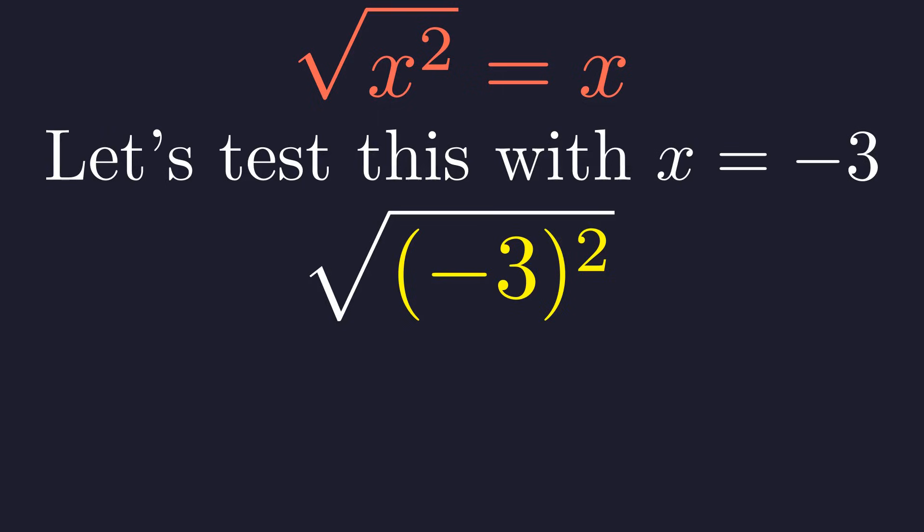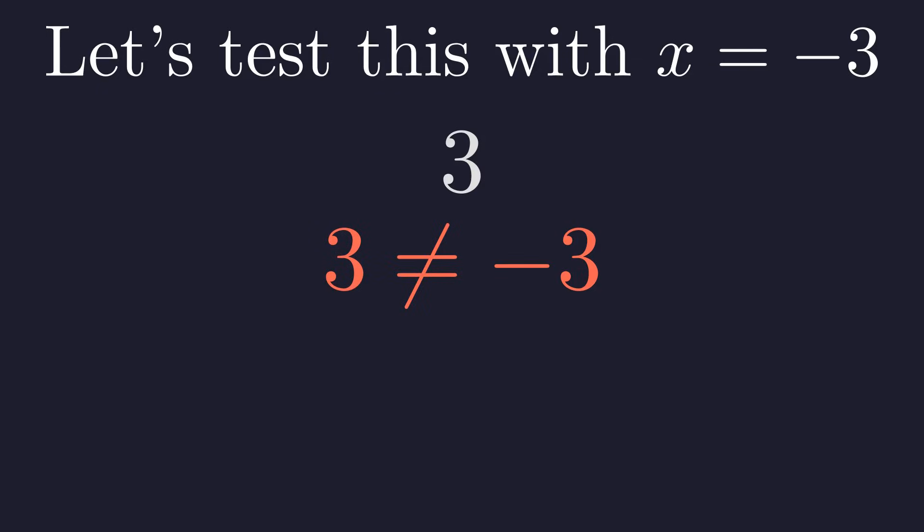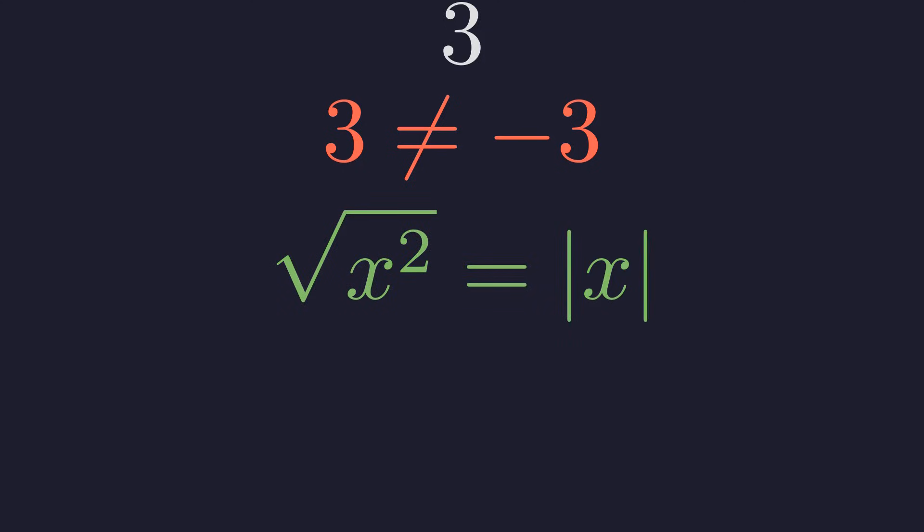The principal square root is by definition always the non-negative result. Therefore the square root of nine is positive three. But this leads to a contradiction: we found the result is three, not the original x value of negative three. The initial identity failed. The correct identity is that the square root of x squared is the absolute value of x.